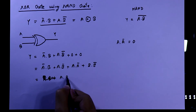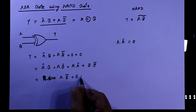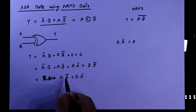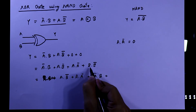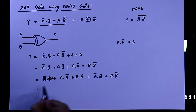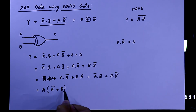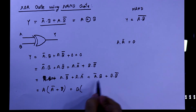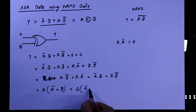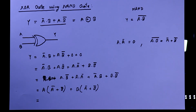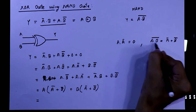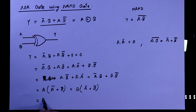Now I will rearrange: taking A dot B-bar plus A dot A-bar together, and A-bar dot B plus B dot B-bar together. If I take A as common from the first two terms, we get A into (B-bar plus A-bar). Taking B as common from the next two terms, we get B into (A-bar plus B-bar). By De Morgan's theorem, A dot B whole bar equals A-bar plus B-bar.